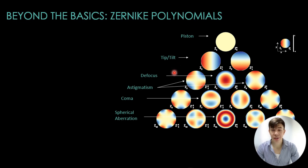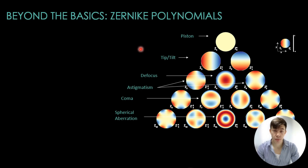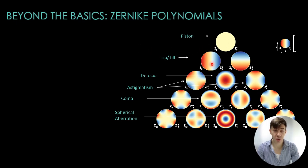Each Zernike polynomial is labeled with a Z and a set of indices that describe its unique shape and characteristics. A key feature is that they are orthogonal, meaning they don't overlap or interfere with each other. This makes them ideal for precisely decomposing a complex wavefront into its constituent aberrations.